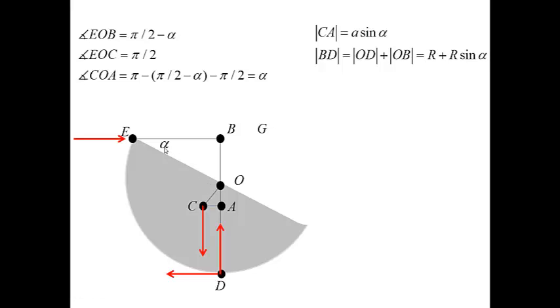Thus, we can write down the moment equilibrium equation in the form P times the length BD must be equal to W times the length CA. And these are the explicit expressions that combine the last four lines.